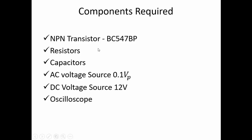These are the components required. We will need an NPN transistor BC547BP, resistors, capacitors, an AC voltage source of 100 mV (0.1VP), a DC voltage source of 12V, and an oscilloscope to measure the output signal.